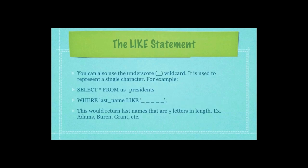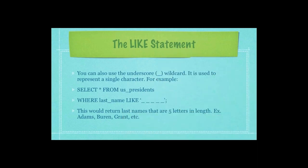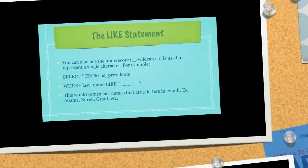You can also use the underscore wildcard, which is used to represent a single character. For example, using the SELECT star from the US presidents table, I'm looking for all last names that are exactly five characters in length — for example Adams, Buren, Grant, etc.